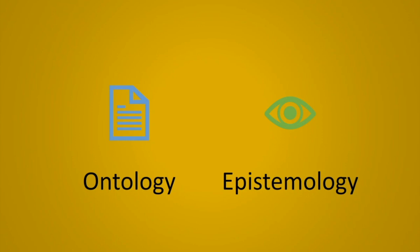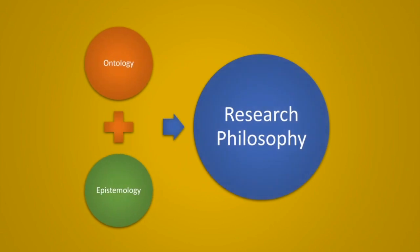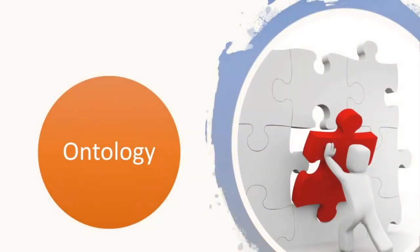Understanding the research philosophies — these are ontology and epistemology. Before explaining each concept, we should understand that ontology and epistemology shape your research philosophy. The research philosophy is mainly dependent on these two components, so it is important for us to understand each of these concepts.